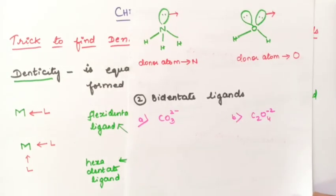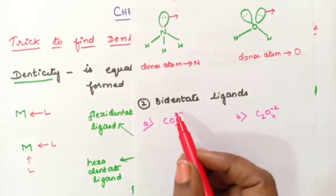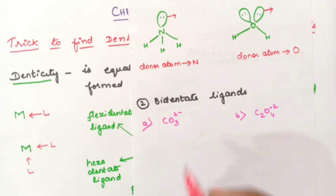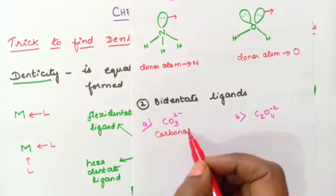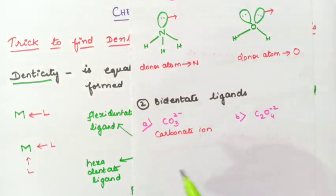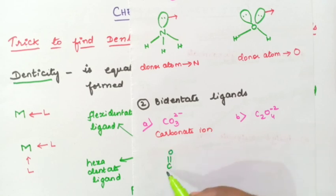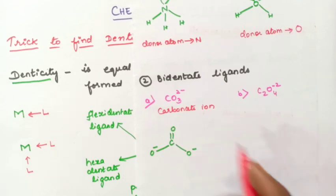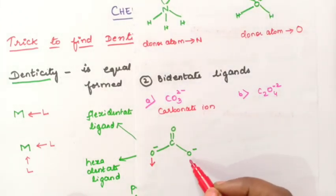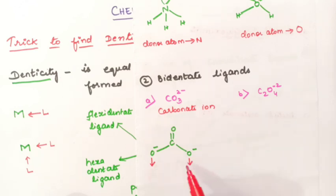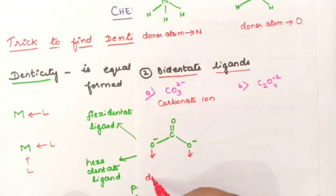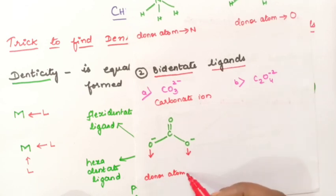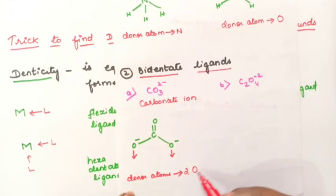Next example is CO3²⁻, the carbonate ion. If you write the structure: C double bond O, O minus, O minus. Using one oxygen it will form one coordinate bond and using another oxygen it will form another coordinate bond. So two coordinate bonds are formed, that is why it is a bidentate ligand. Donor atoms are two oxygen atoms.